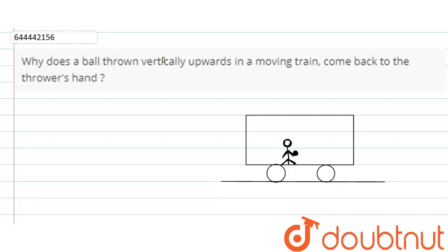Why does a ball thrown vertically upwards in a moving train come back to the thrower's hand? Let us assume that this is a train moving with speed v. The speed is in horizontal direction.